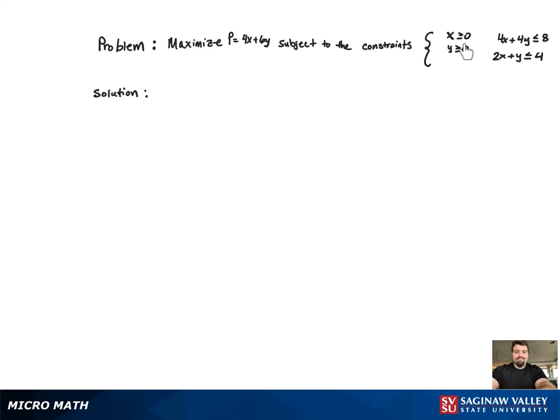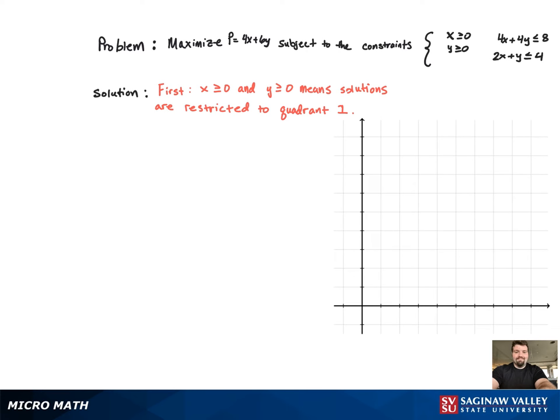First, we should recognize that we're restricted to the first quadrant because of the two constraints: x greater than or equal to 0 and y greater than or equal to 0.